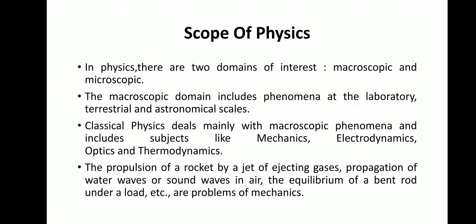Now next is scope of physics. In physics there are two domains of interest: macroscopic and microscopic. The macroscopic domain includes phenomena at the laboratory, terrestrial and astronomical scales. Classical physics deals mainly with macroscopic phenomena and includes subjects like mechanics, electrodynamics, optics and thermodynamics.